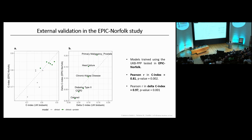UK Biobank is a fantastic resource — unique in its breadth and scale — and very few other studies have this depth of molecular information. Validating these results externally is a challenge. Fortunately, we had done proteomics on baseline samples in the Epic Norfolk cohort with participants followed up over time, and were able to validate a few of our proteomic risk scores developed in UK Biobank in Epic Norfolk.